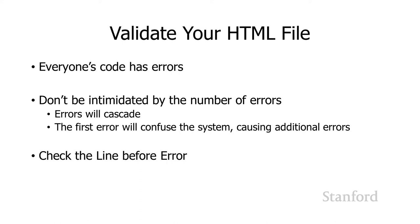The validator will often notice an error on the line after where the error actually occurred. What's happening is the validator is looking for a particular thing in the code and expecting it on the previous line. For example, with attribute-value pairs, the value should have quotes around it. If you have a starting quote and forget the ending quote, the validator is looking for that ending quote. It's not until it reaches the next line that it realizes it should have seen a closing quote, and that's where it marks the error. So often the actual error is on the line before the line number the validator marks.